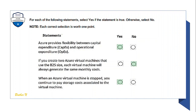Next set: Azure provides flexibility between capital expenditure (CapEx) and operational expenditure (OpEx) — Yes. If you create two Azure virtual machines using the B2S size, each will always generate the same monthly cost — No, they will generate different costs. When an Azure virtual machine is stopped, you continue to pay storage costs associated with the virtual machine — Yes.